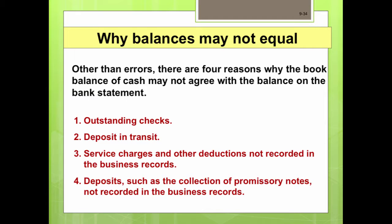There are four reasons why the book balance of cash may not agree with the bank statement balance. Outstanding checks are checks recorded in the cash payments journal but not yet paid by the bank. Deposits in transit are deposits recorded in the cash receipts journal but reaching the bank too late to appear on the monthly statement. Service charges and other deductions may not have been recorded in the business records. Additionally, deposits such as the collection of a promissory note may not yet be recorded.